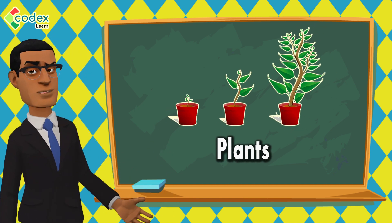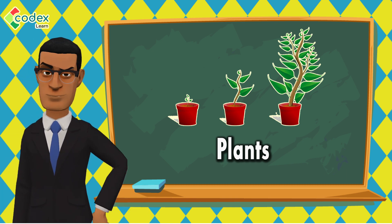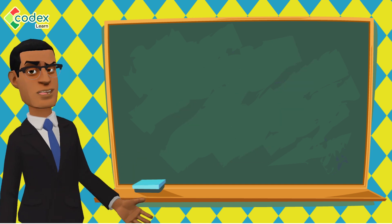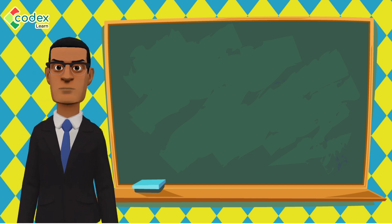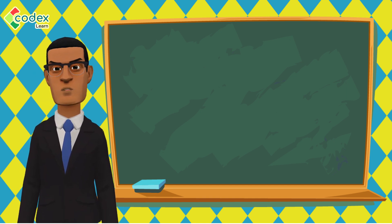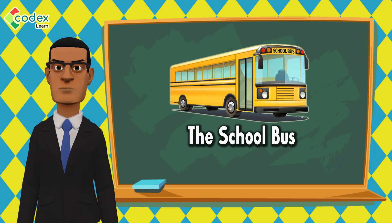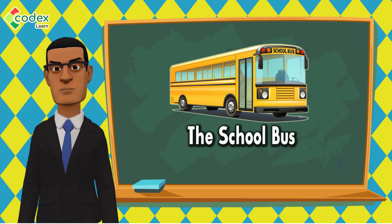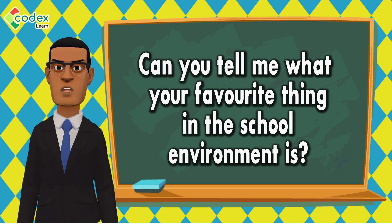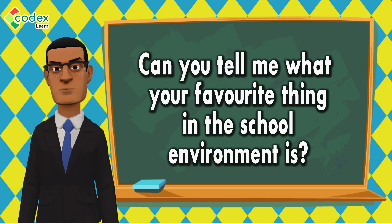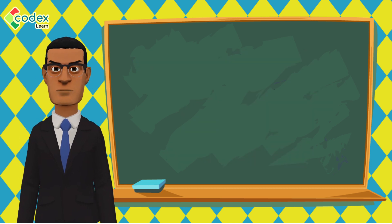Plants are also examples of things in the school environment — we can see them, touch them, and smell them. Our classmates and other pupils are part of the school environment. Everything in the school, including the buses, tables, and chairs, makes up the school environment. My favorite thing in the school environment is the school bus. Can you tell me what your favorite thing in the school environment is?